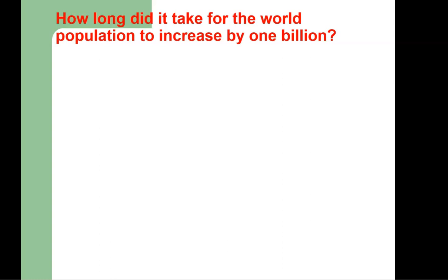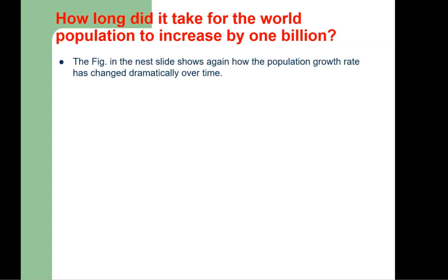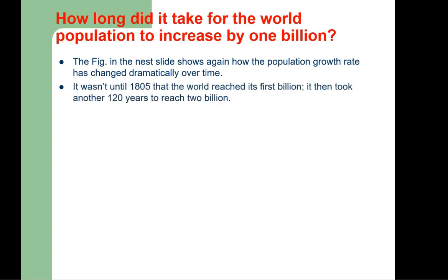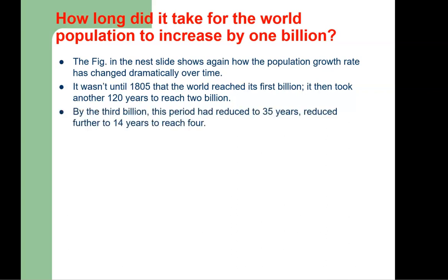Another question is: how long did it take for the world population to increase by each billion? The figure in the next slide shows how the population growth rate has changed dramatically over time. It was until 1805 that the world reached its first billion. Then it took another 120 years to reach 2 billion. By the third billion, this period had reduced to 35 years, and it reduced further to 14 years to reach 4 billion.